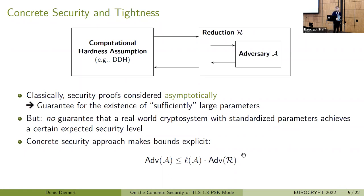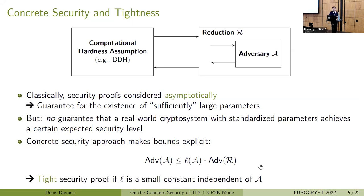This results in bounds of the form shown here on the slide: the advantage of some fixed adversary against our cryptosystem is bounded by the advantage of our reduction to the computational hardness assumption times some loss function L, which may or may not depend on the adversary. This relation allows us to choose parameters for a desired security level backed by the security proof, or to check whether certain parameters achieve the desired security level. We say a security proof is tight if the loss function L is independent of the adversary — for example, a small constant.